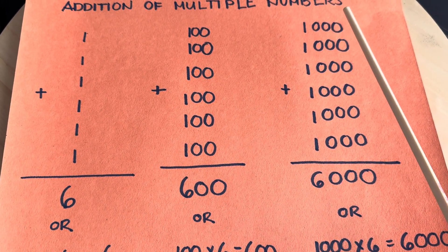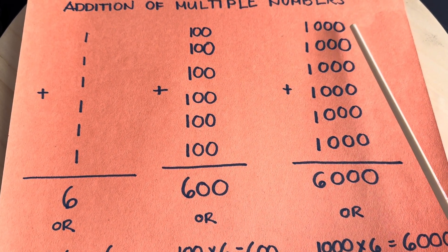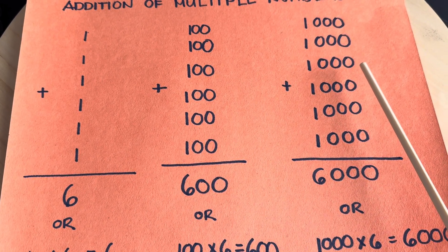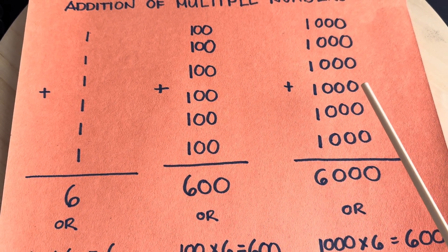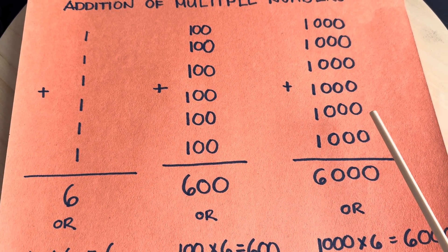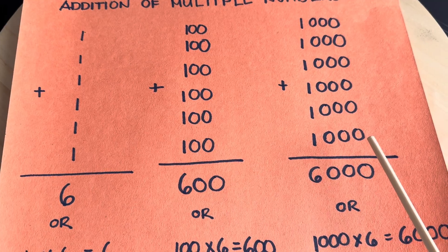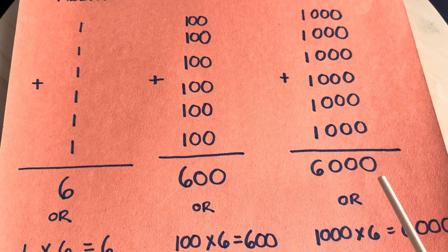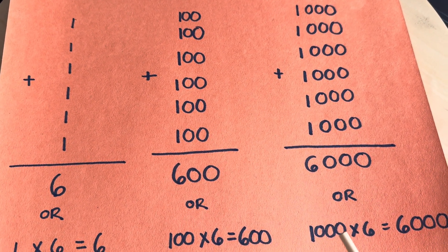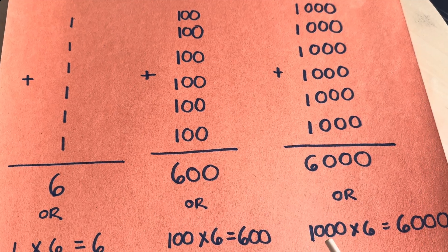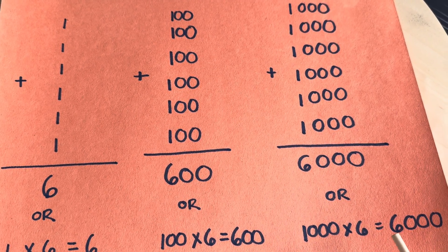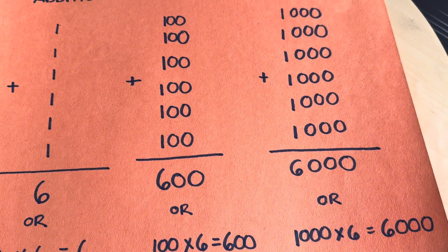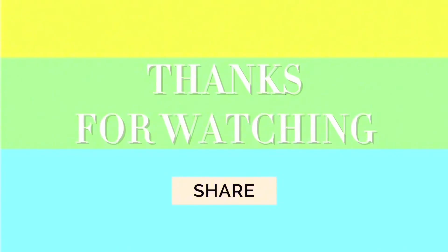Example number 3: 1,000 plus 1,000 plus 1,000 plus 1,000 plus 1,000 plus 1,000 is equals to 6,000. Or in multiplication, 1,000 times 6 is equals to 6,000. Thank you for watching!